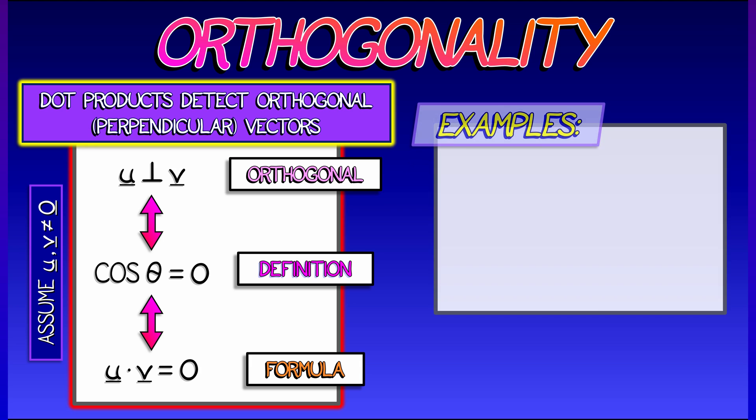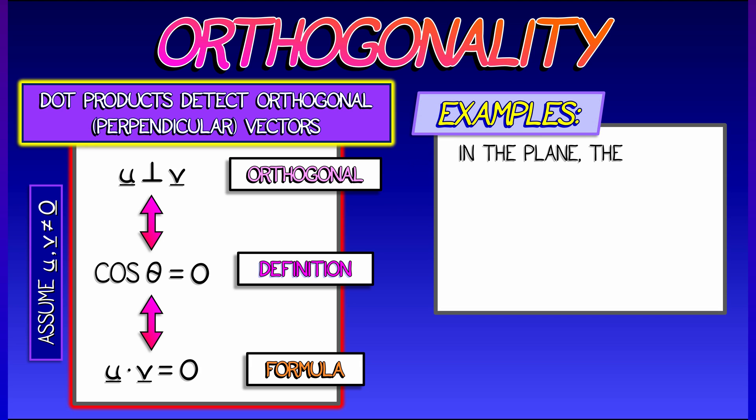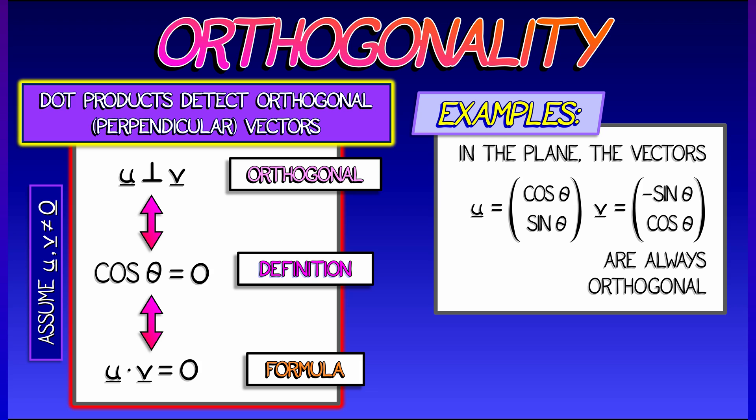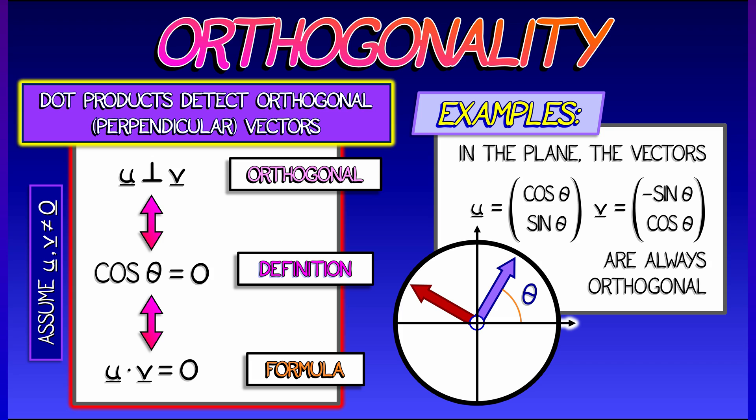This is incredibly important. So for example, if you're in the plane and you have the vector cosine of theta, sine of theta, and minus sine theta, cosine theta, then whatever value of theta you choose, these are always orthogonal. They're like rotations of the ij vectors by some angle theta.